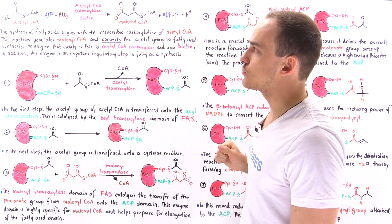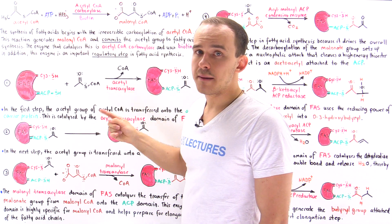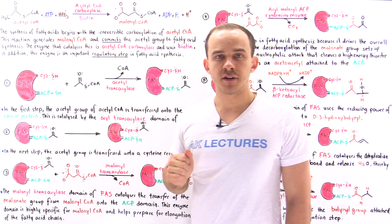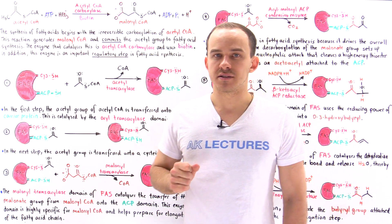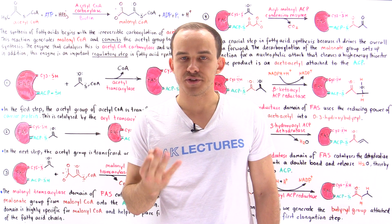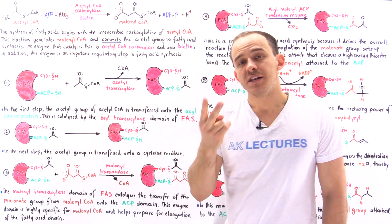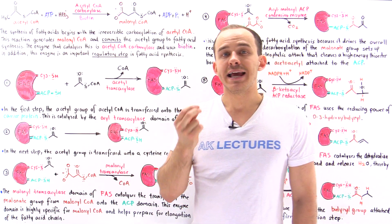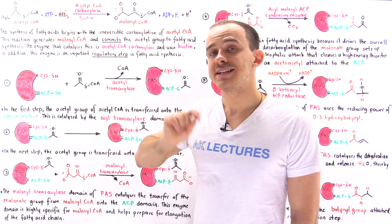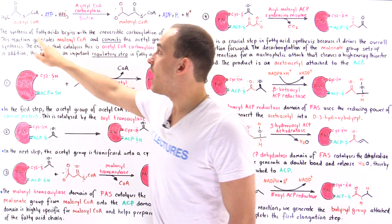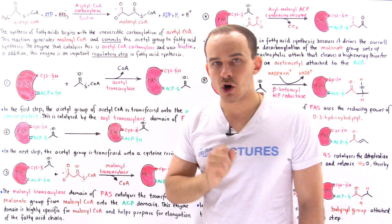The enzyme that catalyzes this step is a carboxylase — more specifically, acetyl coenzyme A carboxylase. Like any other carboxylase, this enzyme requires three things. Number one is an energy source, which is where ATP comes into play. Number two is a carbon source, because as the name implies, the carboxylase will attach a carbon dioxide onto the acetyl coenzyme A molecule, elongating it by one carbon. That is why we have the bicarbonate.